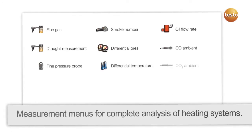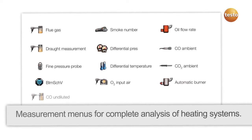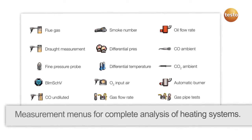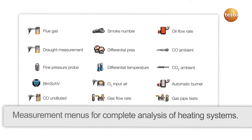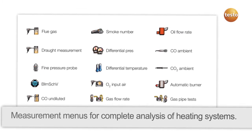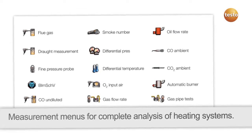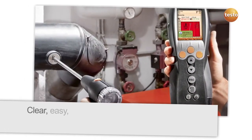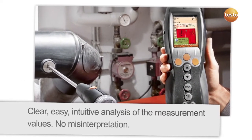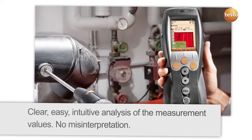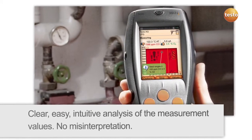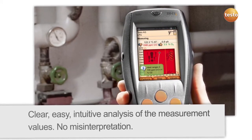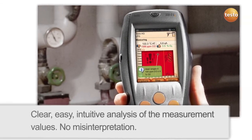The extended measurement menus allow a comprehensive analysis of the heating system. The measurement data are clearly visualized on the display. This is shown by the following examples of typical measurement tasks. The CO concentration and the combustion shown here are poor. The Testo 330LL gives you the target values for the ideal combustion values.